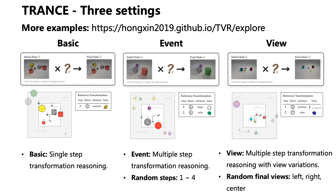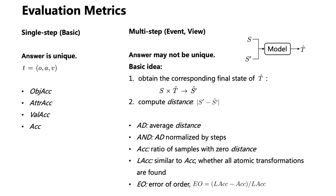TRANS includes three settings to test different levels of transformation reasoning. Basic is to test single-step transformation reasoning. Event is to test multiple-step transformation reasoning. View further tests the reasoning with view variations. You can find more examples in our project page, and the whole dataset has been released.